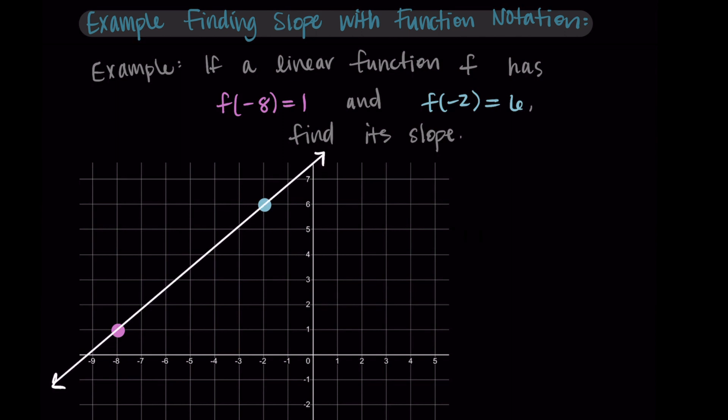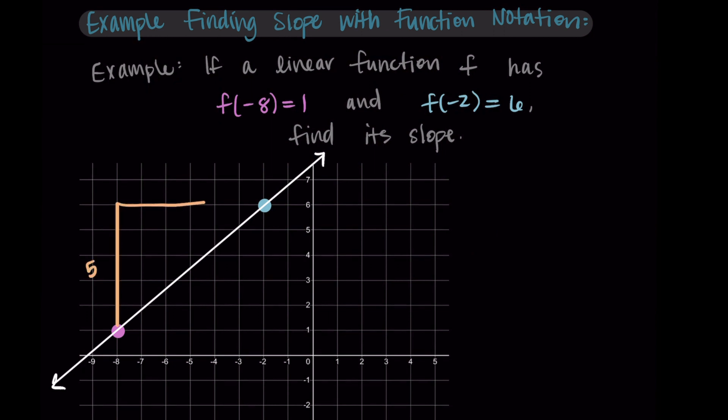Now, as we're looking at the rate of change between these two points going from left to right, I should see that the change in output is 5 and the change in input is 6. So that delta f(x) is 5. We're going up 5. And then the delta x is 6 since we're going to the right by 6. And then this relates to our 5 divided by 6. Our 5 over 6 is our slope, so the change in output over the change in input.